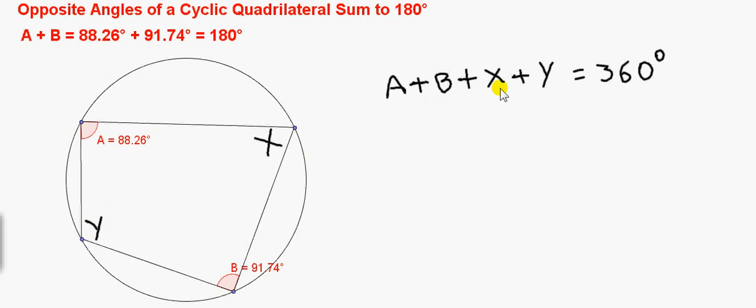Now the four angles of any quadrilateral sum to 360 degrees, because we can divide a quadrilateral into two triangles. So the three angles in this triangle sum to 180 degrees, and the three angles in this triangle here also sum to 180 degrees. So if we put the angles of both of these triangles together we get four angles in the quadrilateral, so we get them summing to 180 plus 180 or 360 degrees.